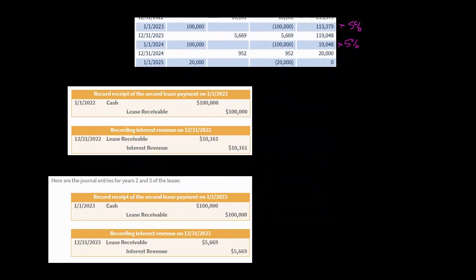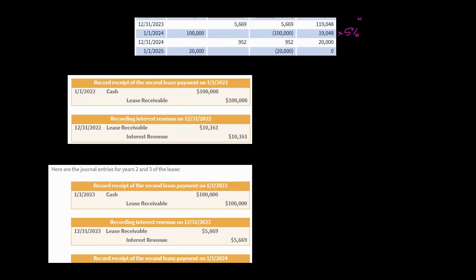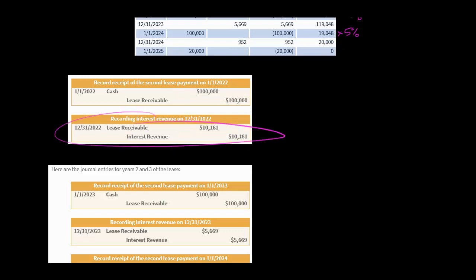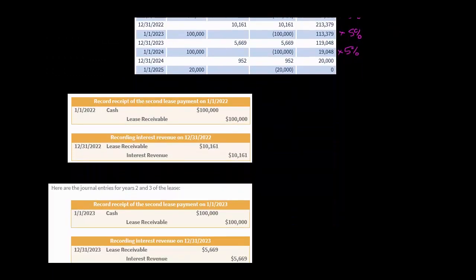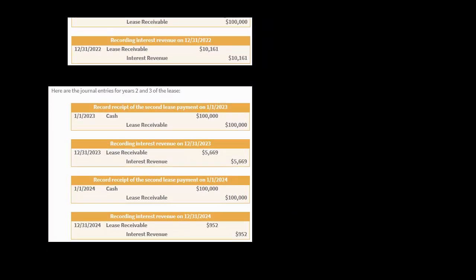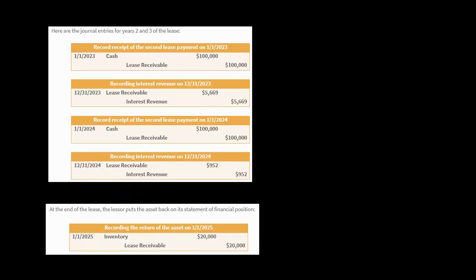When the lessor receives the cash, they increase the cash account and reduce the lease receivable because it's no longer receivable — they got the rent payment. When they accrue the interest revenue, this is going to affect the lessor's income statement. The lessor is going to recognize selling profit on the lease. In years 2 and 3 of the lease, we just continue: we get cash, we reduce the lease receivable, and we recognize interest revenue.